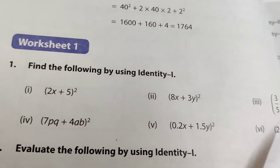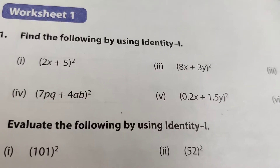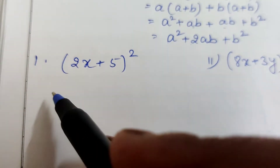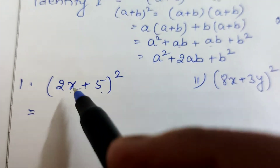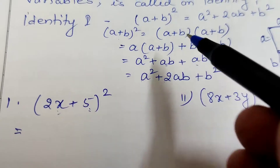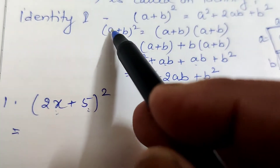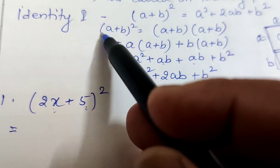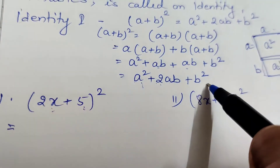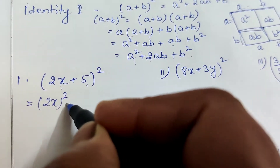Now Worksheet 1: find the following by using identity 1. There are six questions — (2x + 5)², (8x + 3y)², and so on. For the first one, (2x + 5)², it is a binomial. Let a be the first term and b be the second term. The answer is: square of the first number, plus twice the product of the two numbers, plus square of the second number.